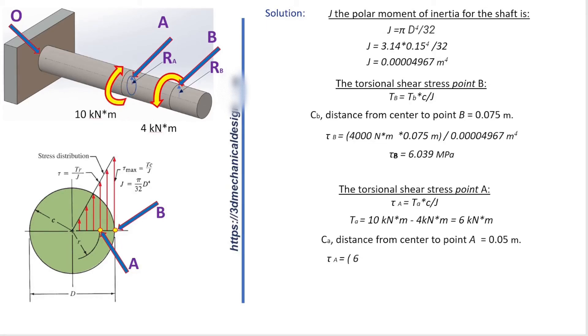Tau A equals 6,000 times 0.05 divided by 0.00004967. Tau A equals 6.039 megapascals.